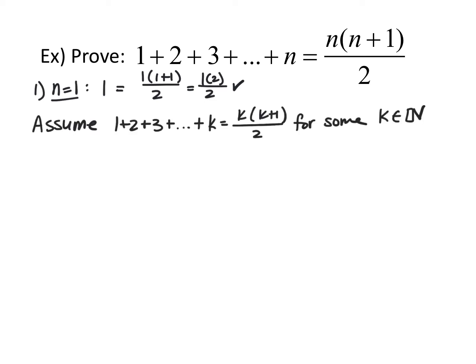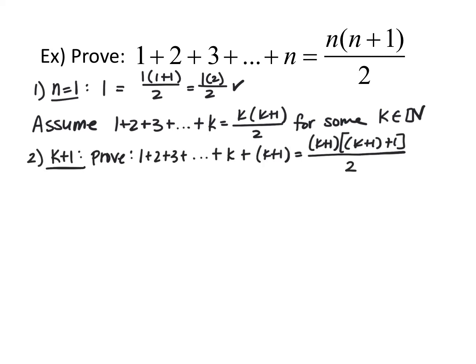Next, we make our assumption statement: assume that 1 plus 2 plus 3 plus so on plus k is equivalent to k times k plus 1 over 2 for some k in the natural numbers. Now we need to prove it's true for k plus 1 — that 1 plus 2 plus 3 plus ... plus k plus k plus 1 equals k plus 1 times k plus 2 all over 2. Go ahead and pause the video and try to prove this statement.